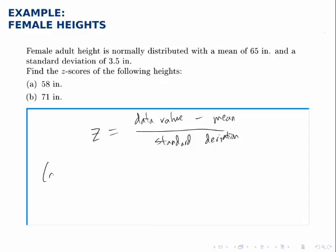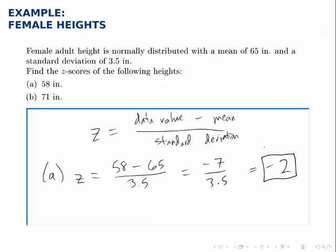For the first example, to calculate z we take 58 minus the mean 65 and divide by the standard deviation 3.5. 58 minus 65 is negative 7, and that divided by 3.5 is negative 2. This means the first data value is two standard deviations below the mean.